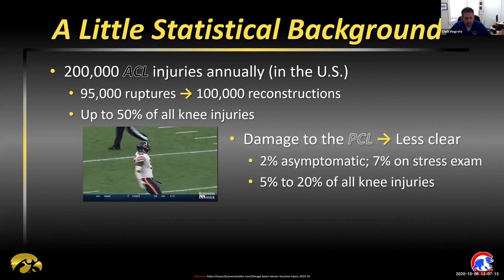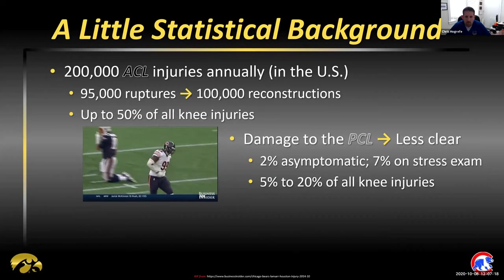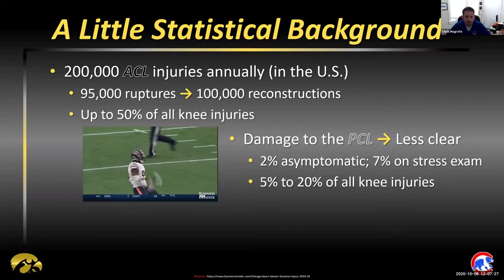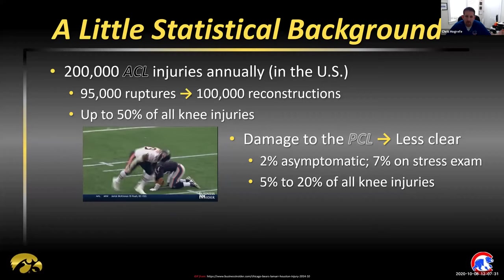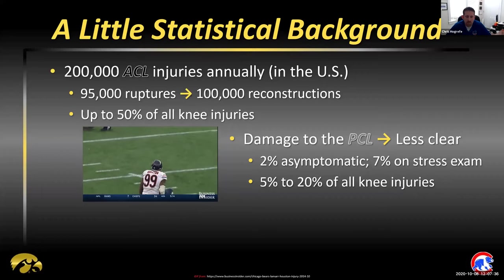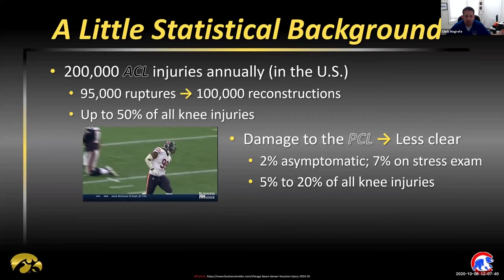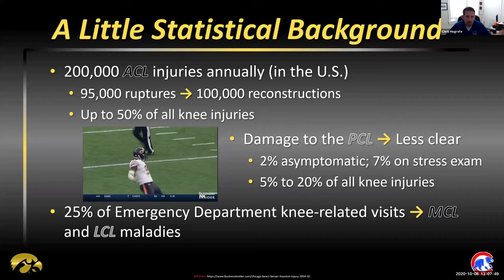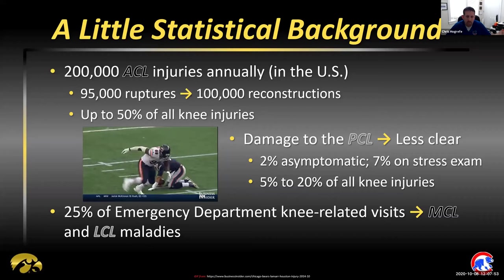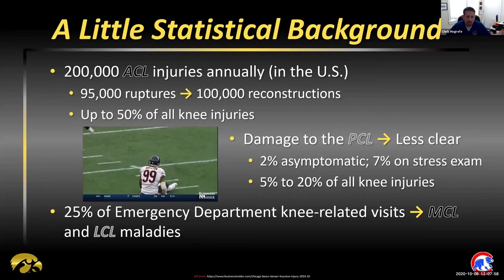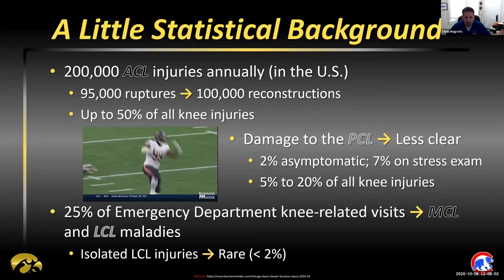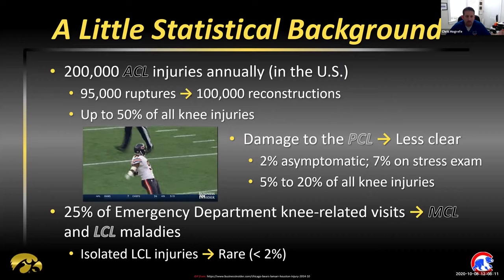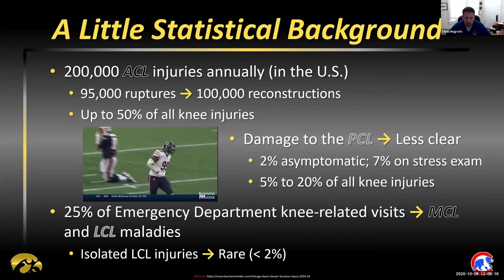The PCL incidence is really quite obscure in the literature. There are thoughts that 2% of them are asymptomatic — I examined a pitcher this year who had a complete tear of his PCL that was totally asymptomatic. Stress exam can reveal maybe three to four times as many, and perhaps up to 20% of knee injuries involve the PCL. Because I am emergency medicine trained, perhaps up to a quarter of knee-related visits involve the MCL and LCL. Isolated LCL injuries are fairly rare — less than 2% of all knee injuries — so if you find an LCL injury, start hunting for the other damaged structure.